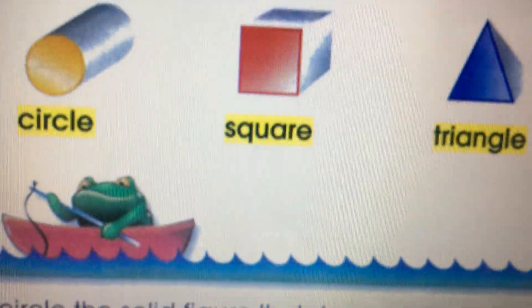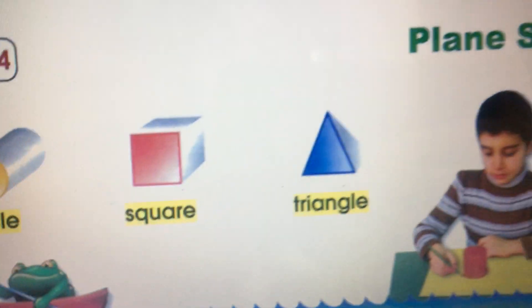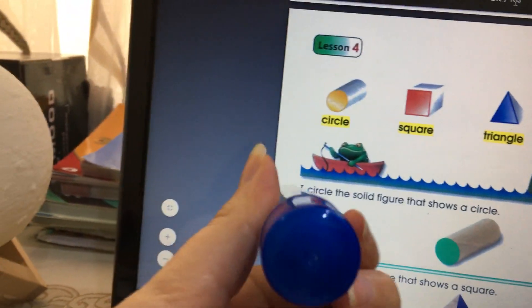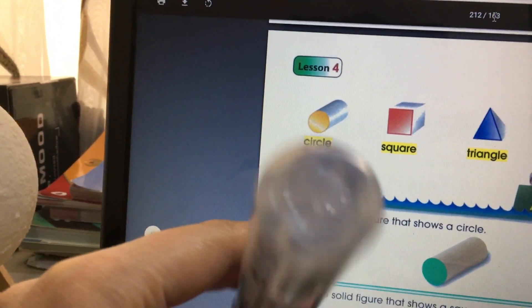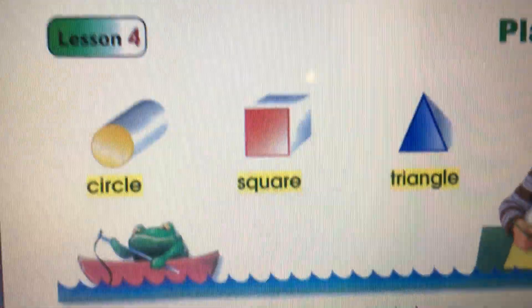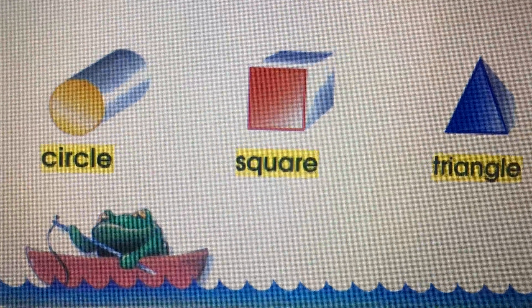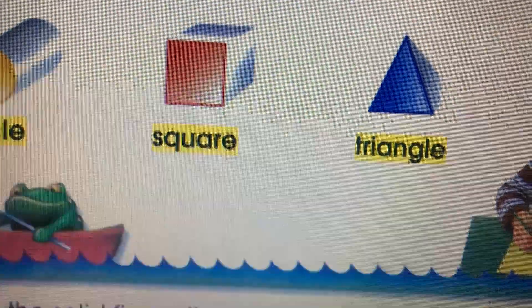That is a circle — the face of the cylinder is called a circle. Next, we have a cube. The face of the cube is called a square. And the face of the pyramid is called a triangle.